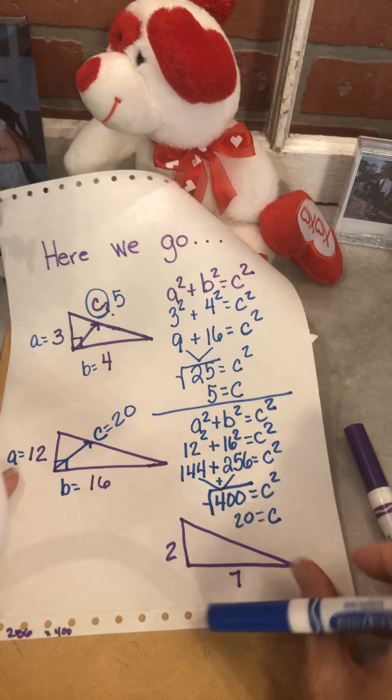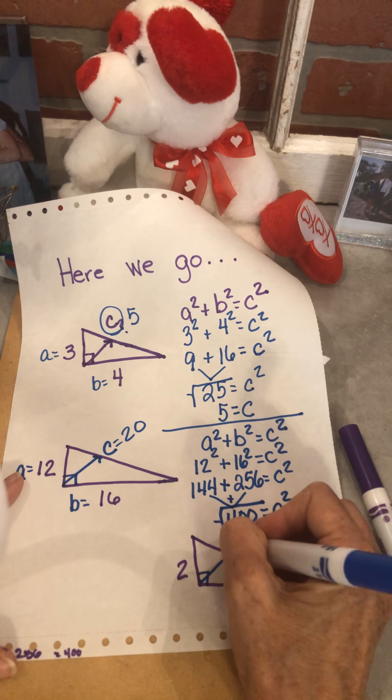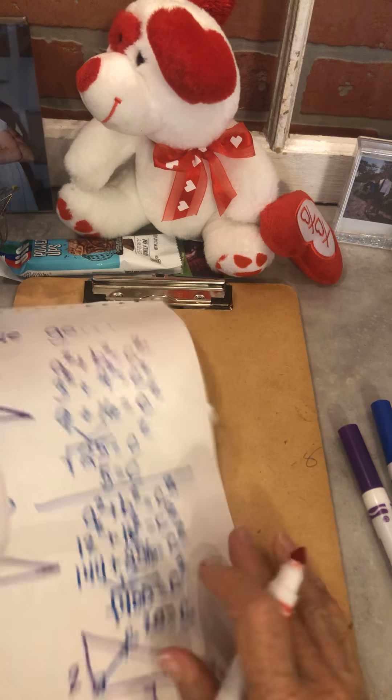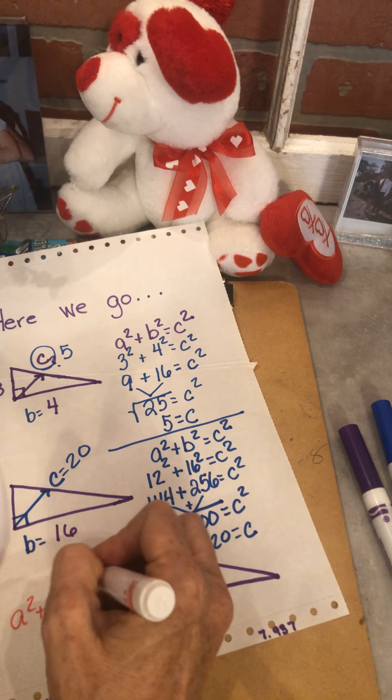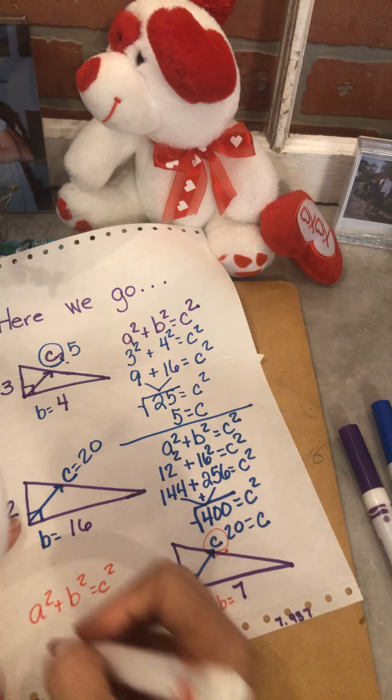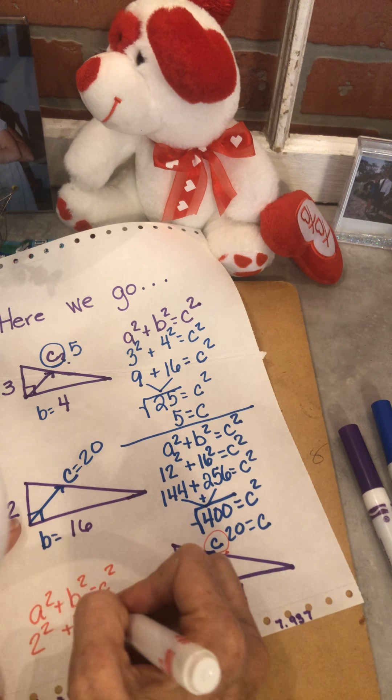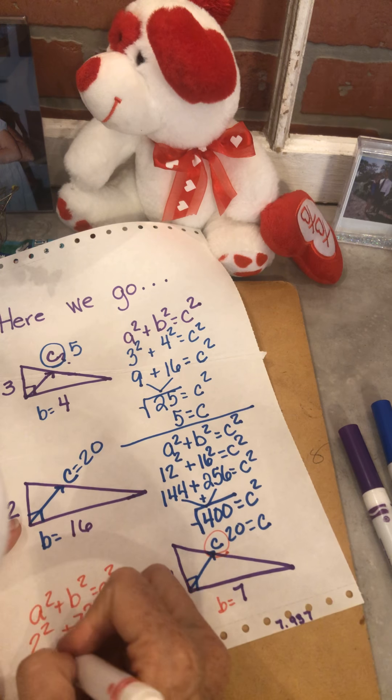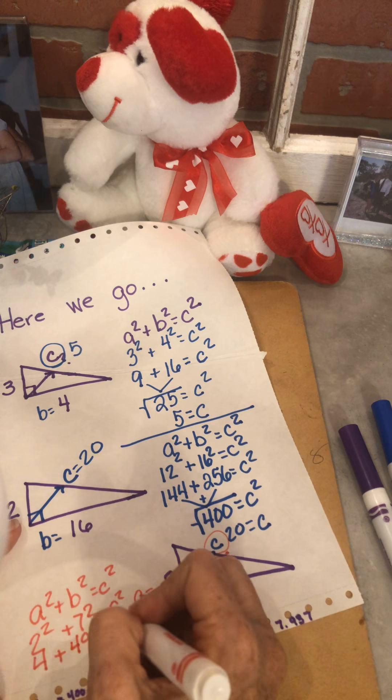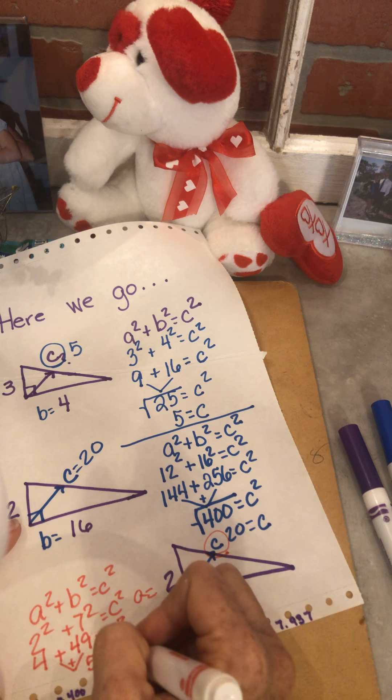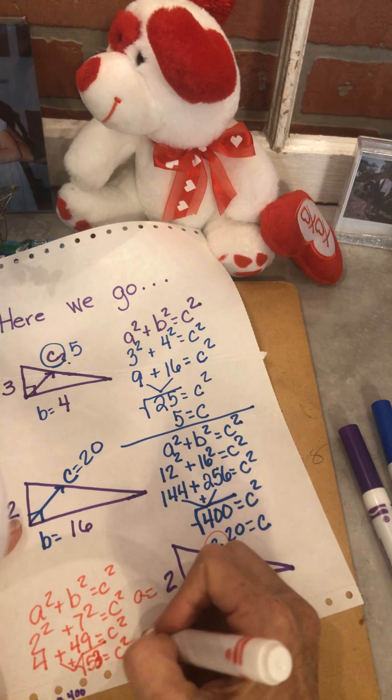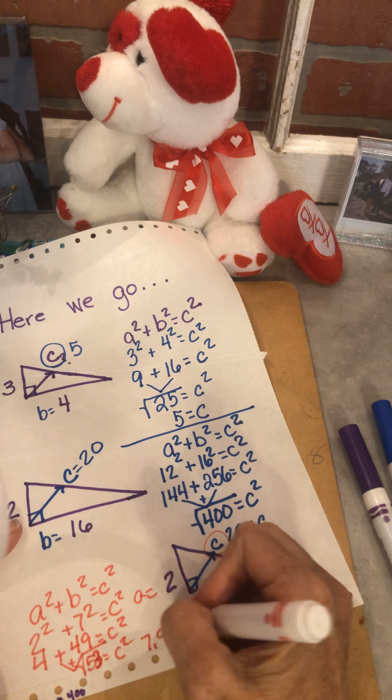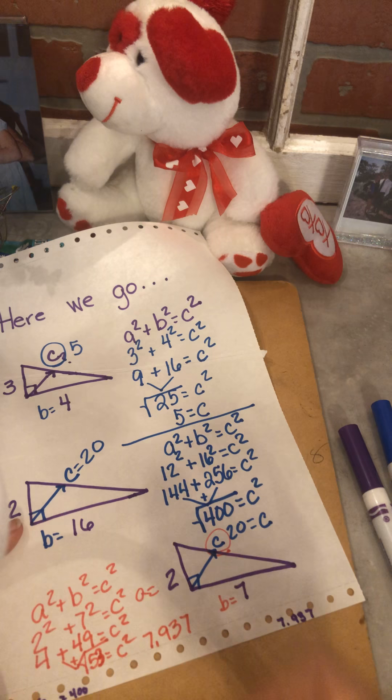Okay, so I have one more to do and I don't have a whole lot of space here. So this is my c. This is what I don't know. Always technical difficulties. So I know a squared plus b squared equals c squared. I'm going to call this a, I'm going to call this b. So 2 squared plus 7 squared equals c squared. 2 squared is 4, 7 times 7 is 49, equals c squared. Add those up, 53 equals c squared.